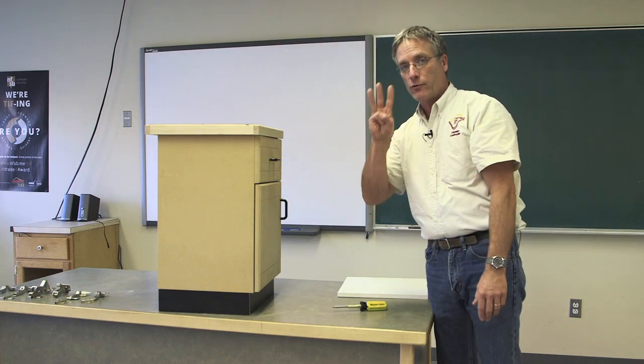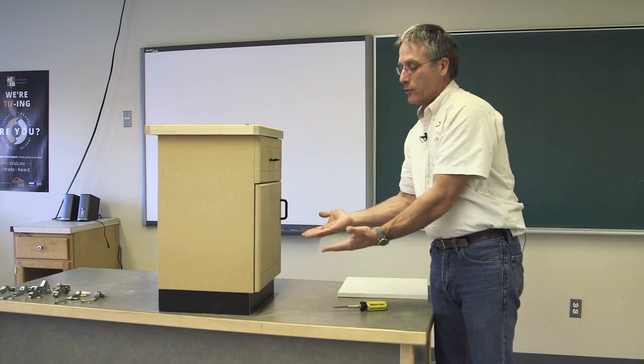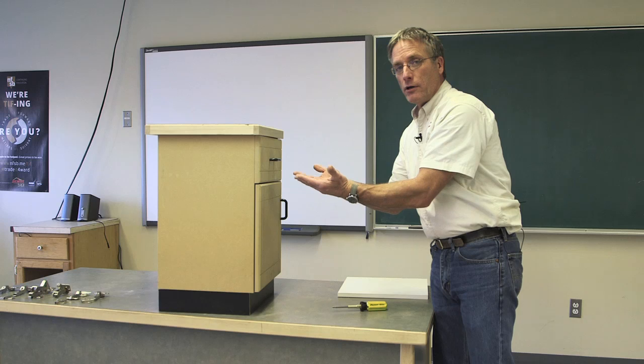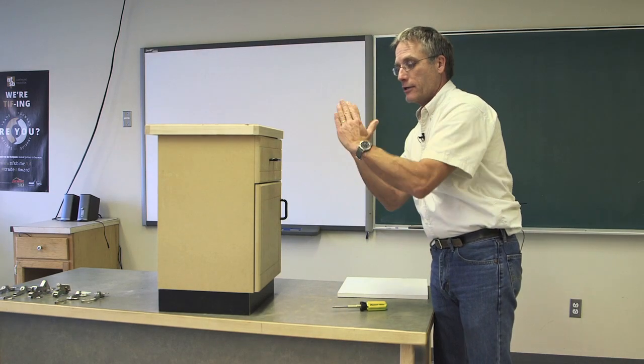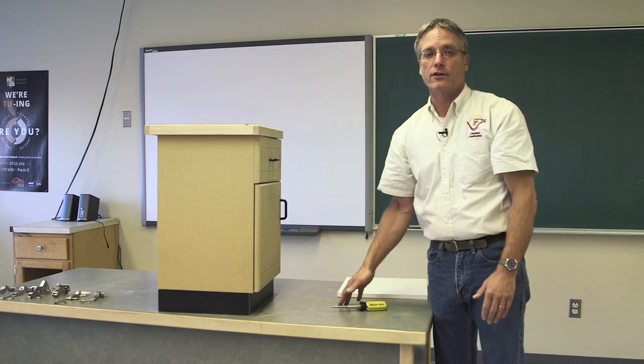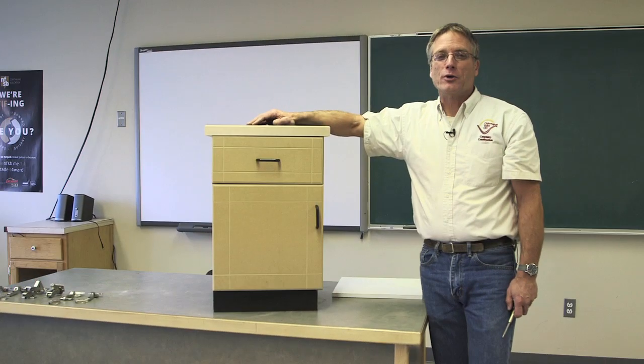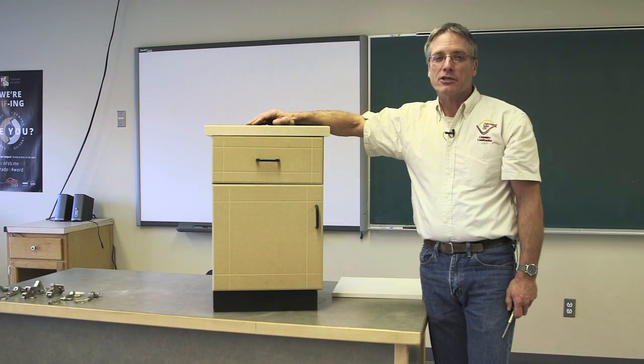All you need to know is that you have three screws to adjust to give you the height of the door, the in and out of the door, and the crookedness of the door or the flatness of the door vis-a-vis the front of the cabinet. And that's how you adjust and maintain your kitchen cabinets that you bought at IKEA.